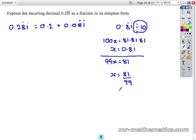We have to divide it by 10. So 0.081 recurring equals 81 over 990.